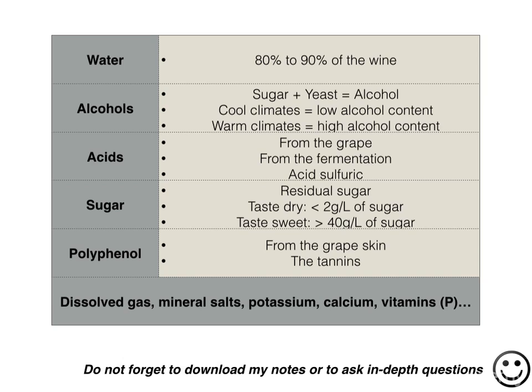The amount of sugar in the grapes determines what the final alcohol level will be. In cool climates, grapes are not ripe enough, so sugar levels will be minimal, and yeast have only a little amount of sugar to consume. Therefore, the wine alcohol level reaches about 8%, which is barely the legal standard. As opposed to warm climates, where there is enough sugar for the yeast to consume, so alcohol level reaches about 14%.